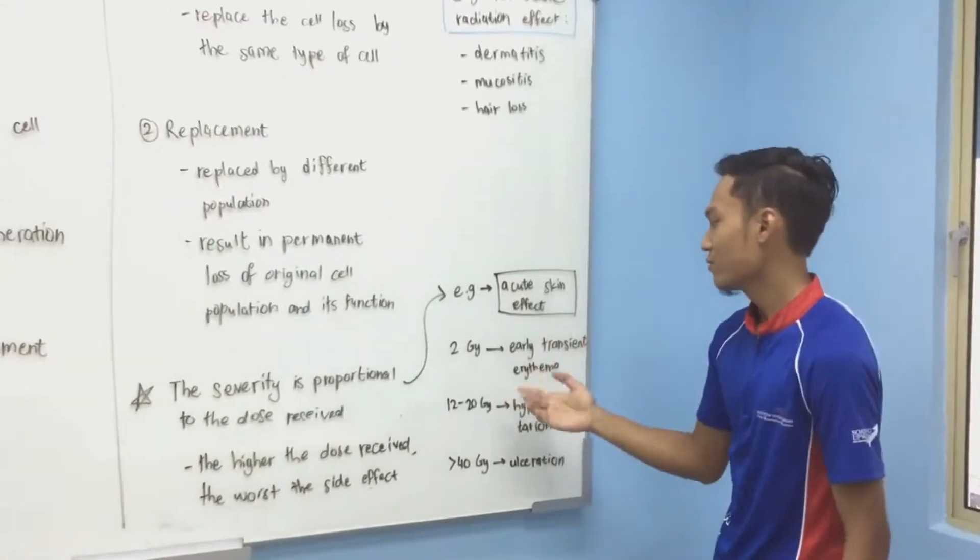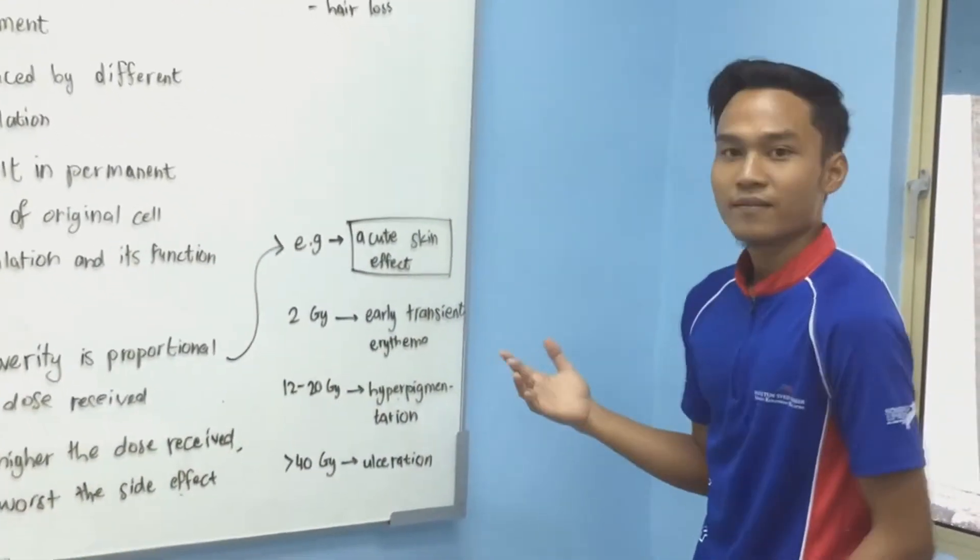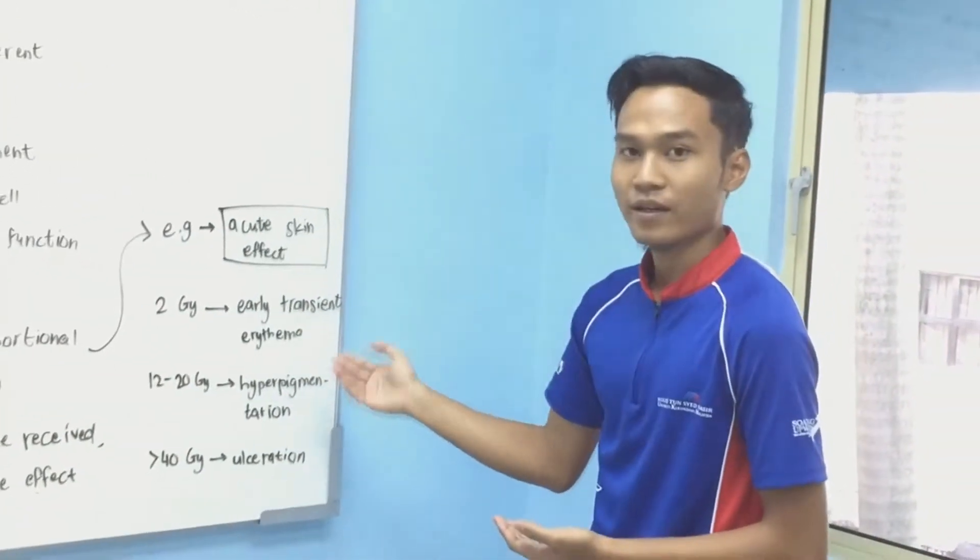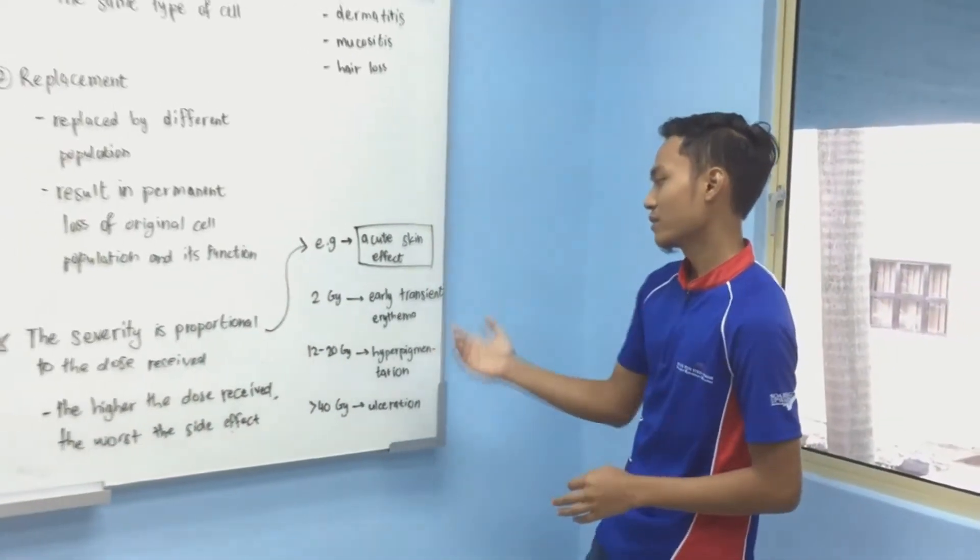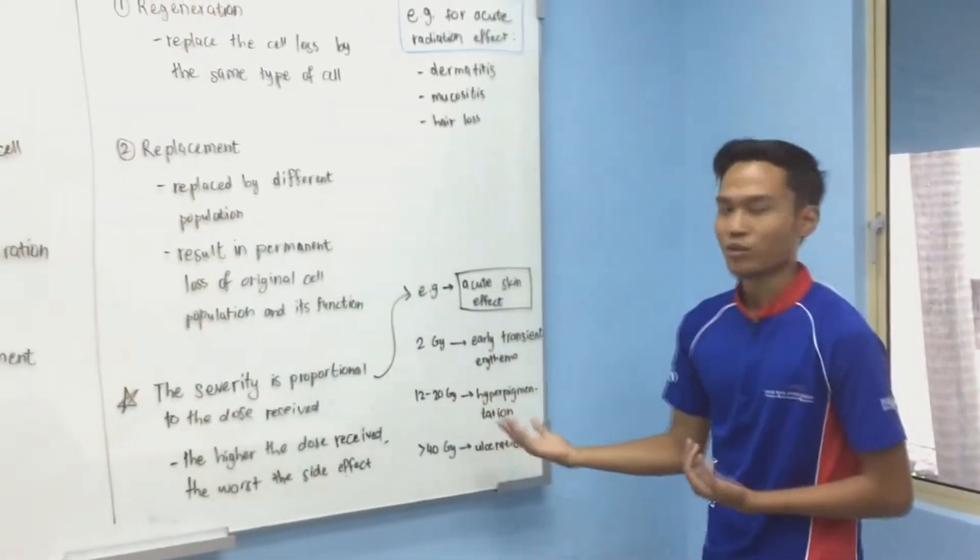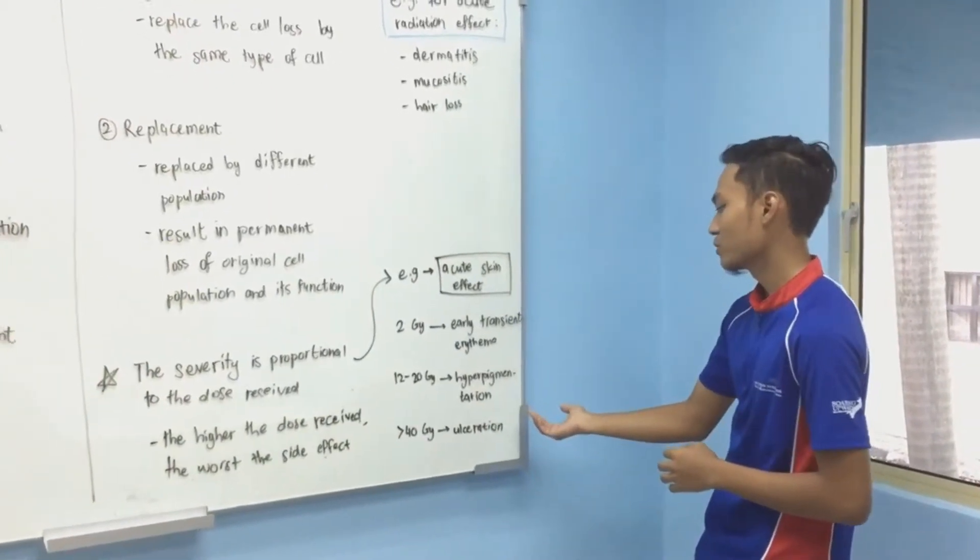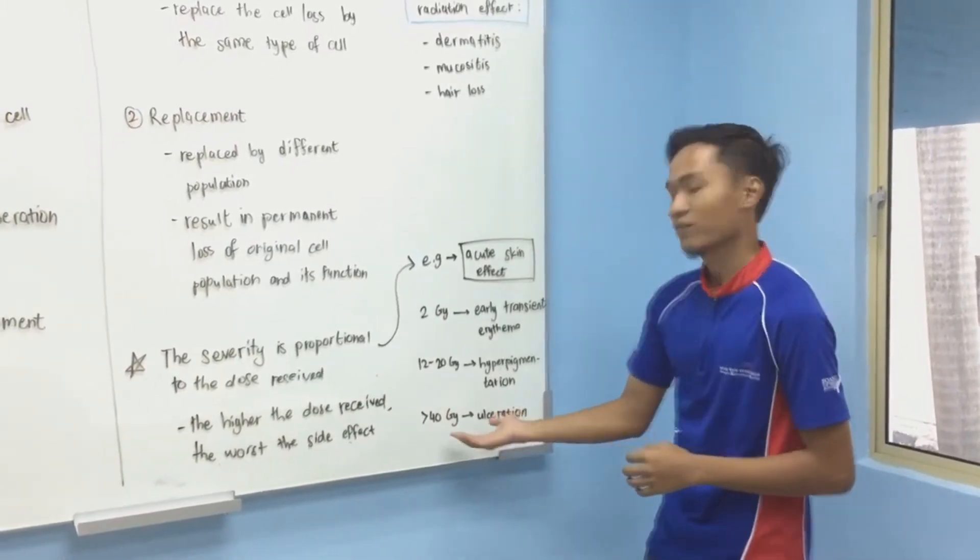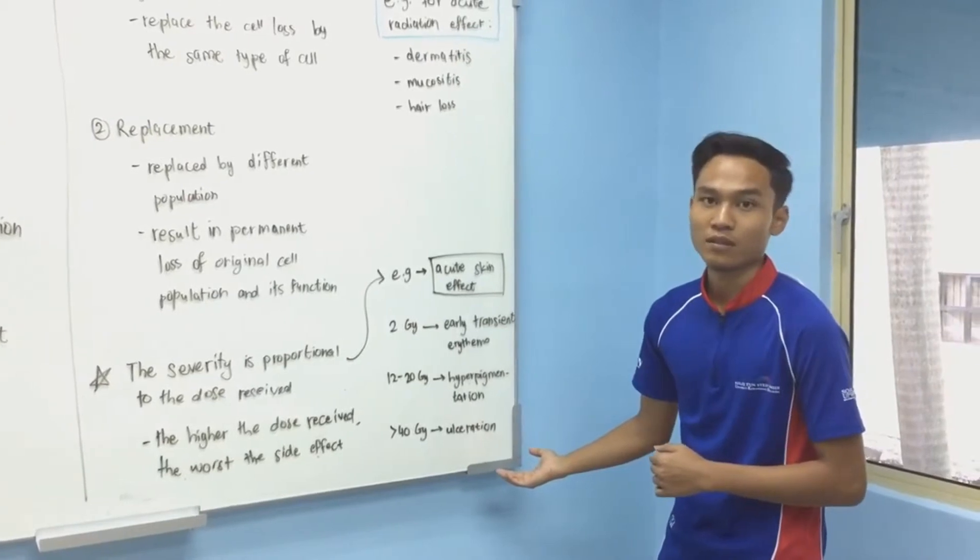For acute skin effects, if the cell receives only 2 Gray dose, it can cause early transient erythema. If the cell receives 12 to 20 Gray, it can cause hyperpigmentation. And if the cell receives higher than 40 Gray, it can cause ulceration of the skin.